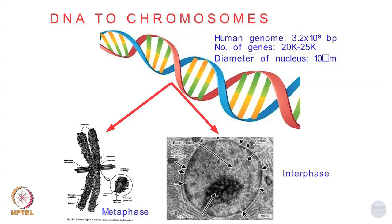This dark spot in the center is the nucleolus, which has no genomic material. But everywhere outside, all over here, you have this DNA which is a polymer floating around inside the nucleus.